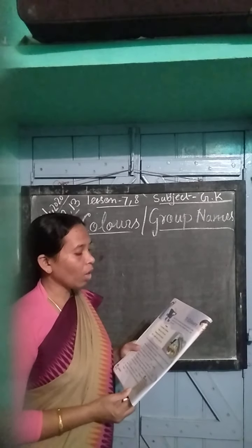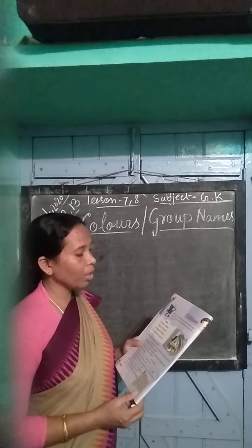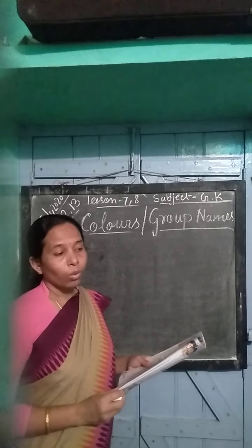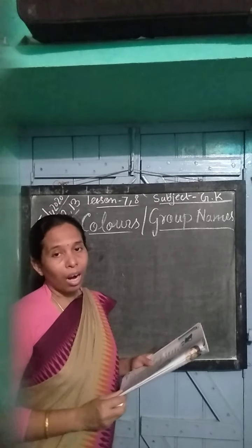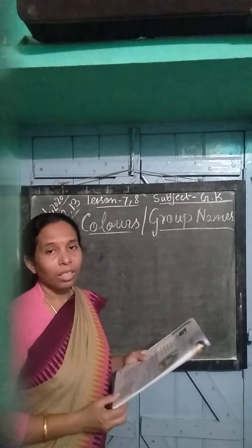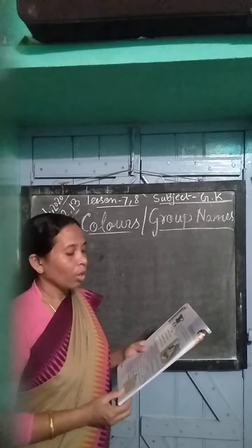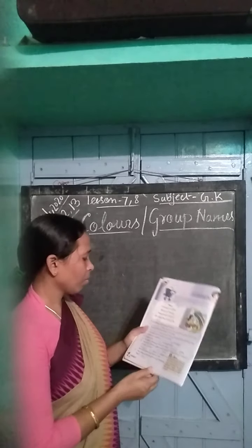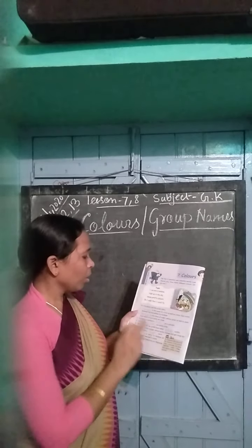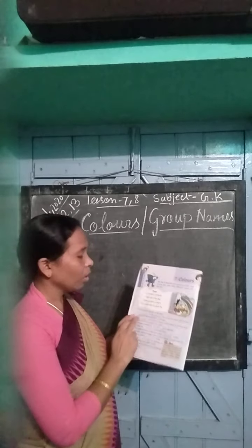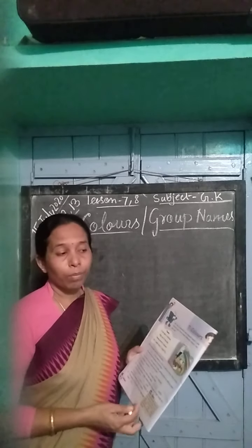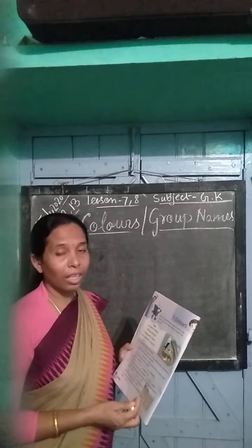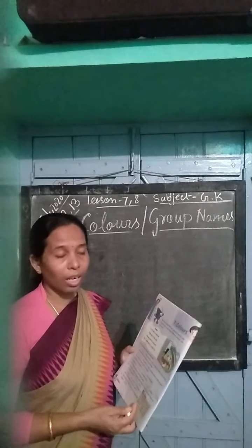Look around you. How many different colors can you see? We will look around — we can see many different colors. We can see flower colors. We can see rainbow colors.